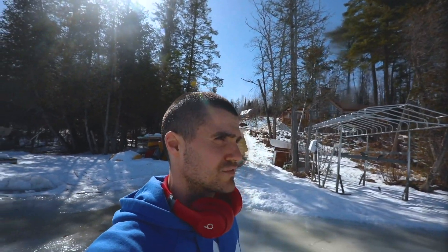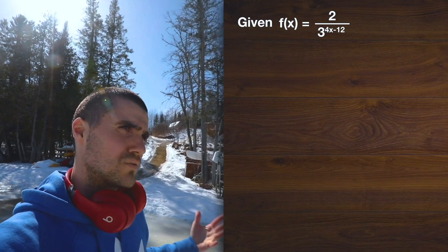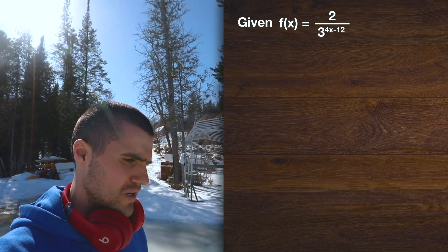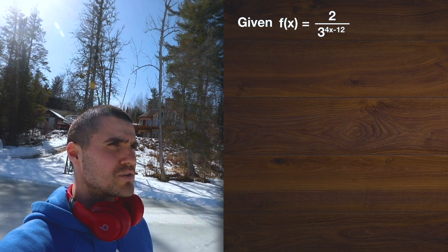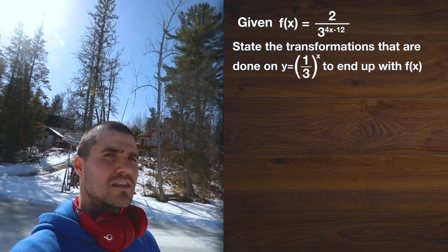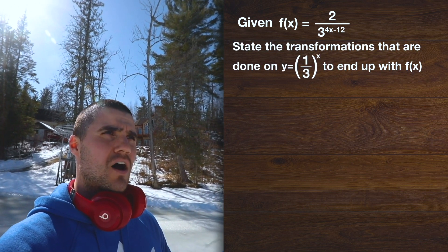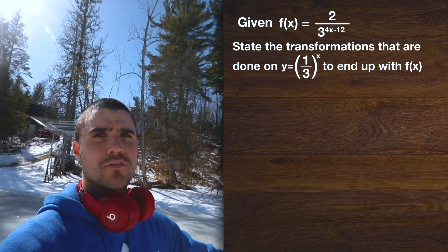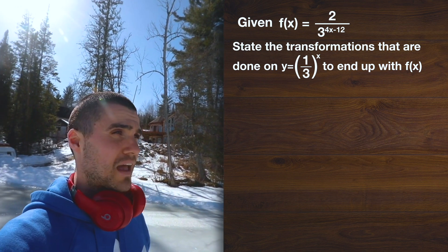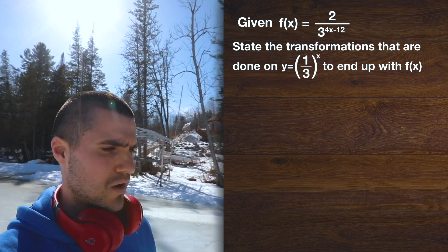Let's try this question. So let's say we have a function 2 over 3 to the power of 4x minus 12, and we're asked to state the transformations that are done on the parent function 1 over 3 to the power of x in order to get to the function we have now: 2 over 3 to the power of 4x minus 12.